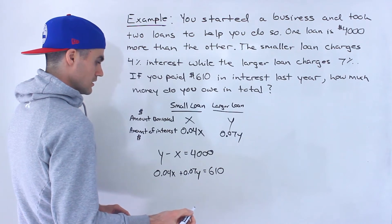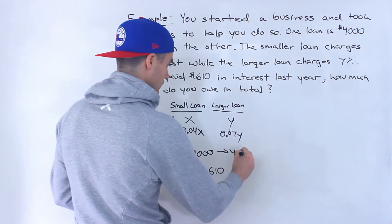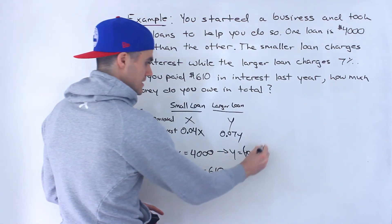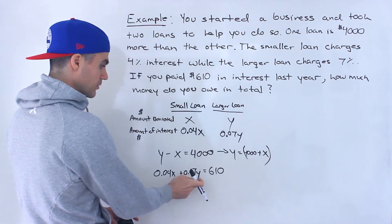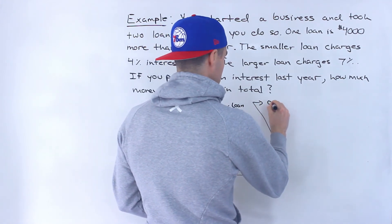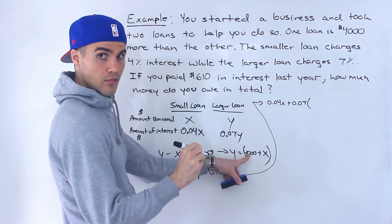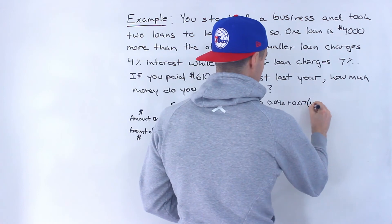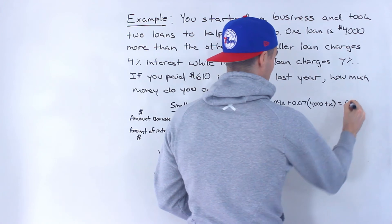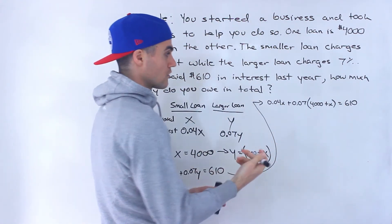What I'm going to do here is use substitution. I'll isolate for Y — bringing the negative X over gives us Y equals 4,000 plus X. Then I'm going to take that expression and plug it in, so we end up with 0.04X plus 0.07 times (4,000 plus X) equals 610.